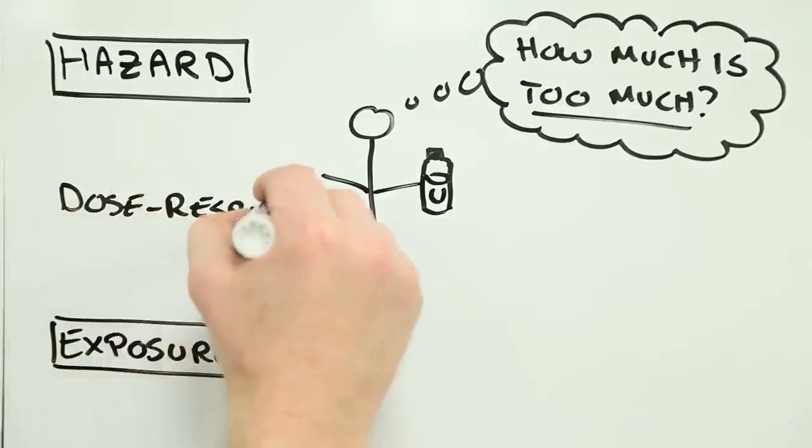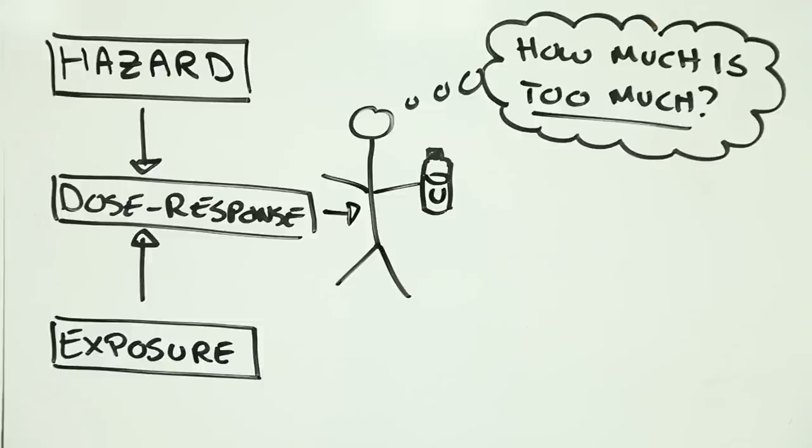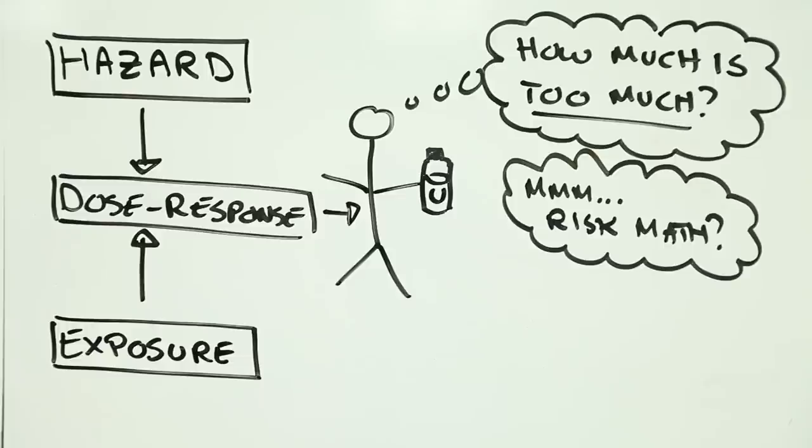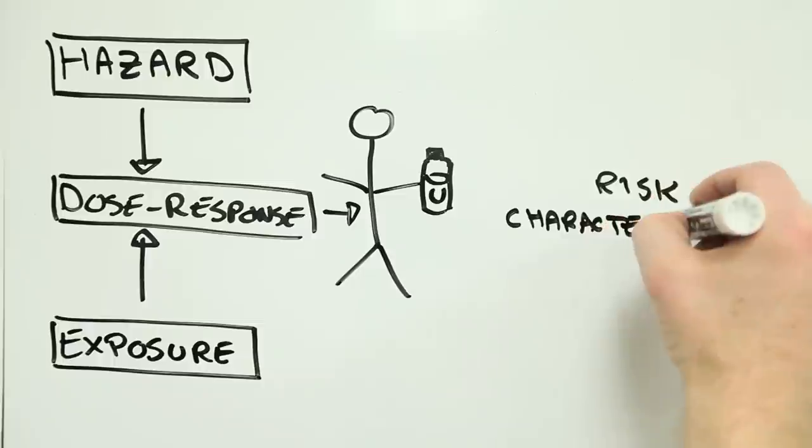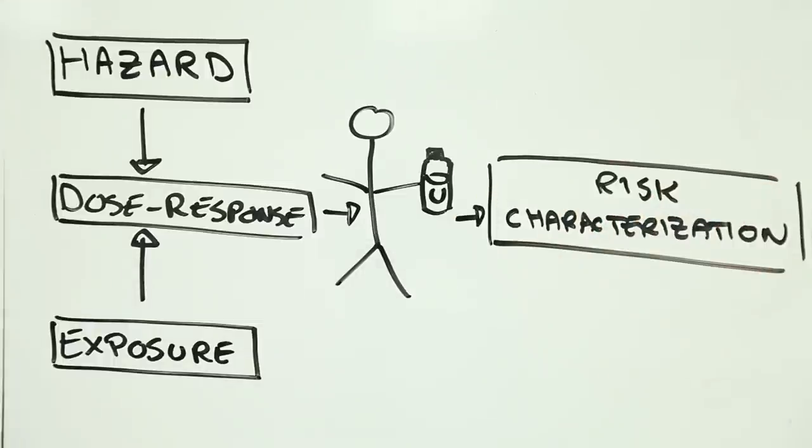If we can measure this or estimate it, we can connect hazard and exposure to the probability of harm occurring, risk in other words. This is the dose-response relationship, and this is what transforms hazard and exposure into a measure of risk.